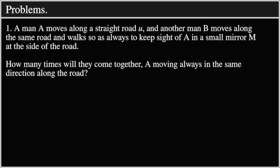Problems. Problem 1: A man A moves along a straight road U, and another man B moves along the same road, and walks so as always to keep sight of A in a small mirror M at the side of the road. How many times will they come together, A moving always in the same direction along the road?